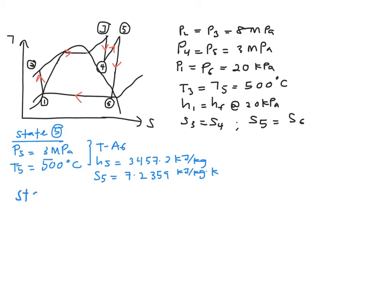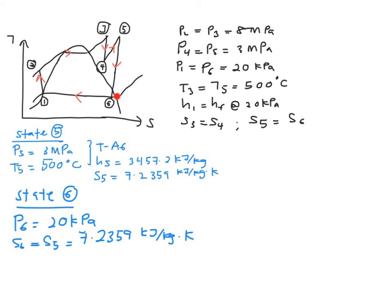Next is to solve for your state 6 which is the final state. You are given P6 is equal to 20 kPa and your S6 is equal to your S5 which is 7.2359 kJ per kg·K. When you are given pressure and your S value, you can verify it first by looking at your table E5 to see whether your S value is already outside the saturated gas region.